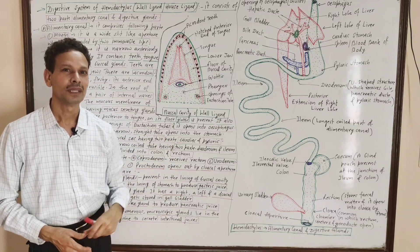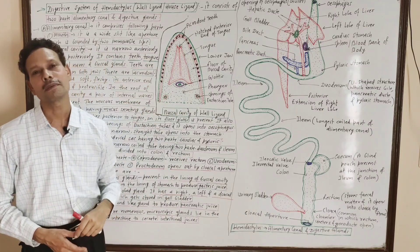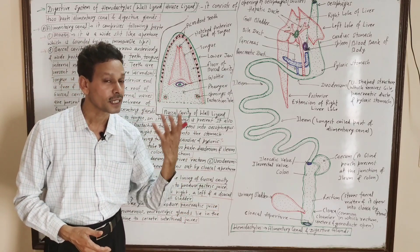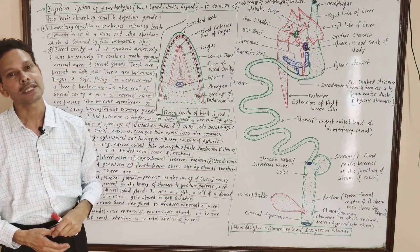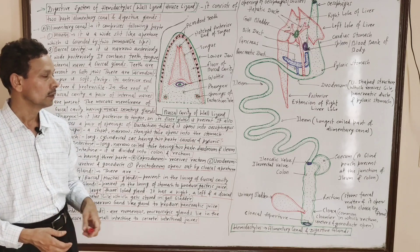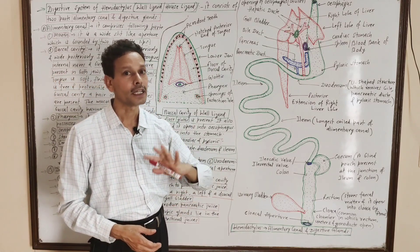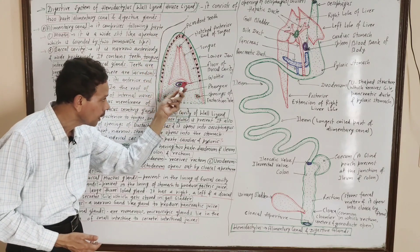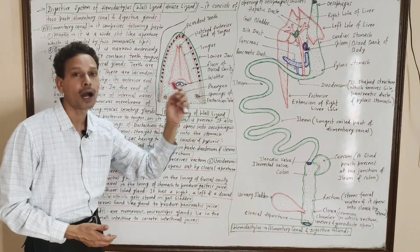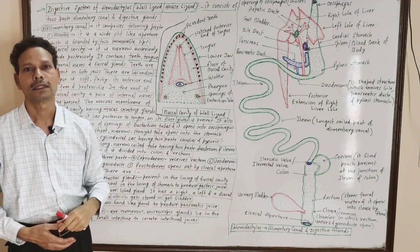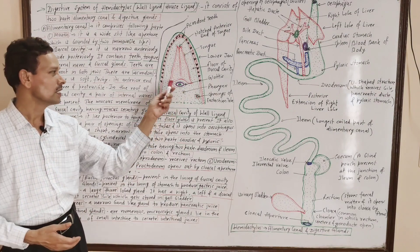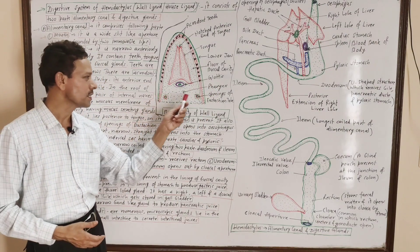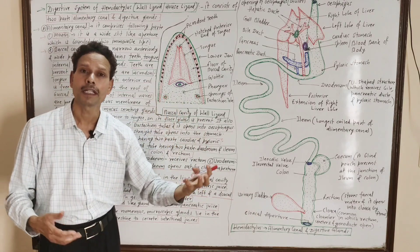The buccal cavity lining — the mucous membrane — contains buccal glands, salivary glands, and mucus-secreting glands. The next part of the alimentary canal is the pharynx, which is the posterior, wider part of the buccal cavity.